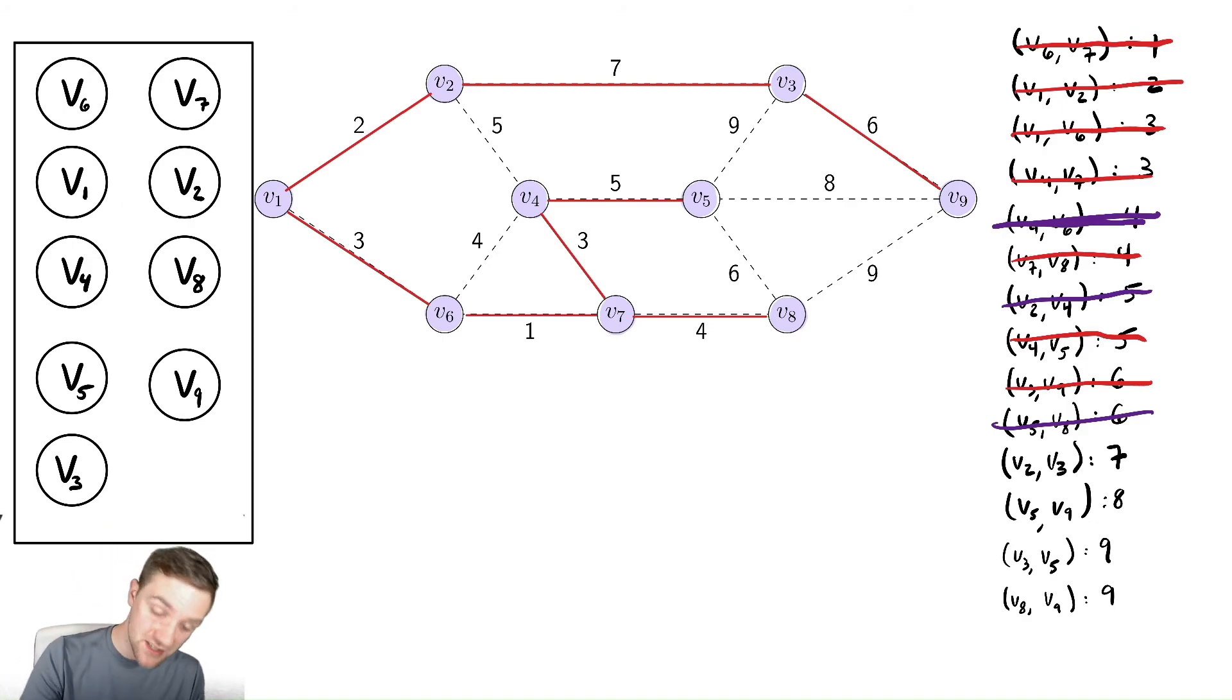Notice there were a couple of points where we had decisions, depending on the order we sorted over here. So here, we had two edges that were both three, here we had two edges that were both four, two that were both five, both six, and so on. So it might matter the order you choose.